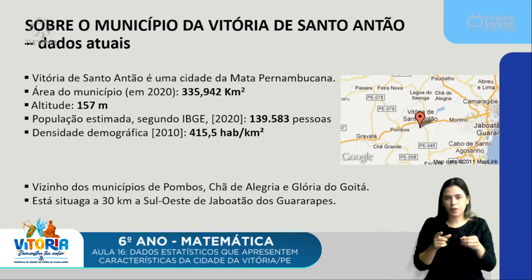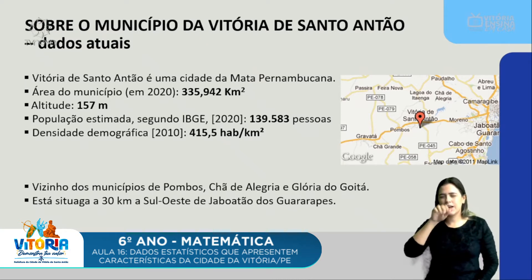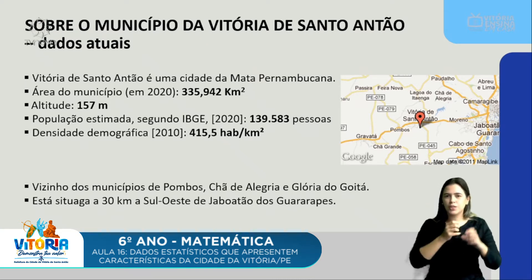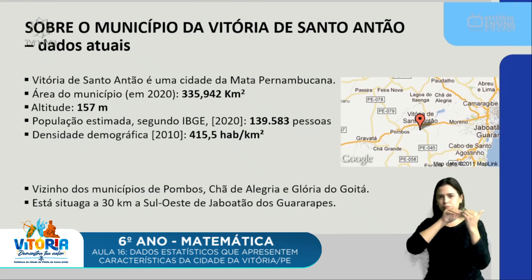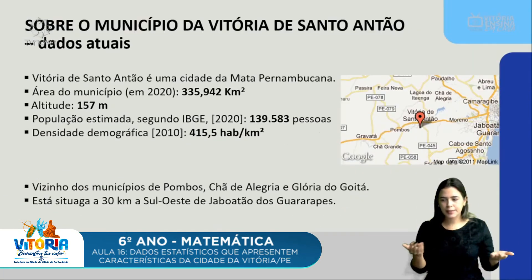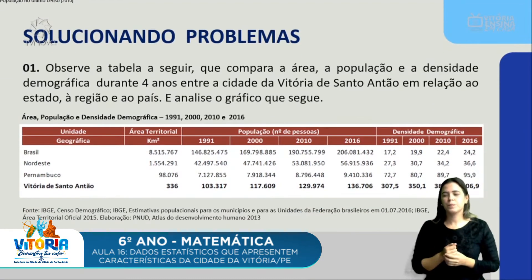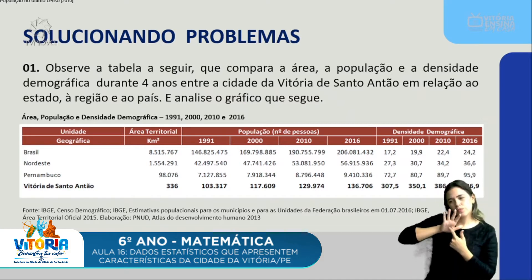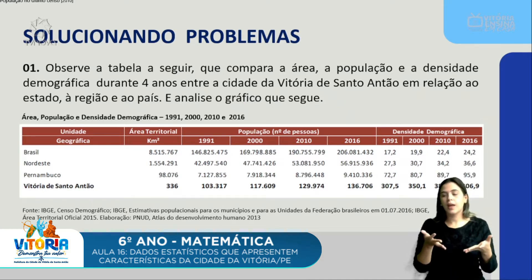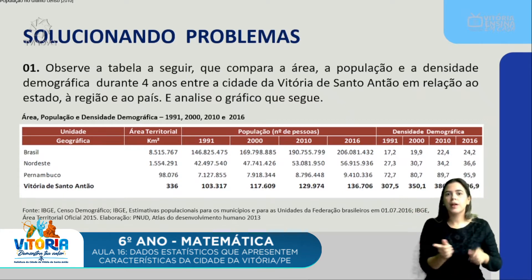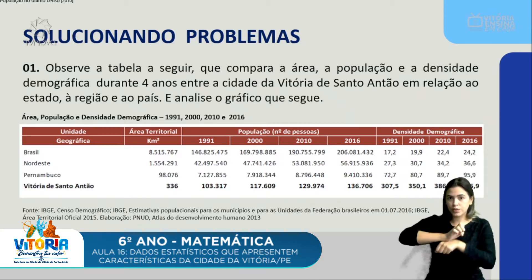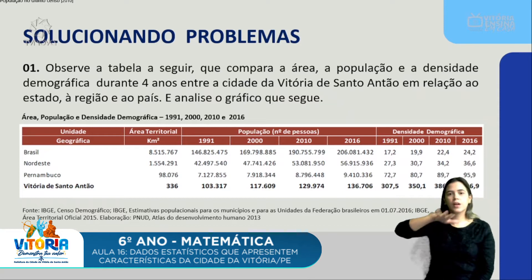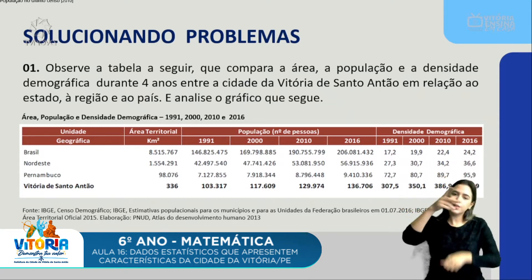Vitória faz vizinhança com os municípios de Pongo, Xande Alegria e Glória do Goitá, e está situada a 30 quilômetros a sudoeste de Jaboatão dos Guararapes, da região metropolitana. Nós temos algumas informações apresentadas nessa tabela. Na aula de hoje, a ideia é a gente analisar tabelas e gráficos. Esta tabela traz os dados de Vitória de Santo Antão, do estado de Pernambuco, da nossa região — o Nordeste — e do país, ao longo de alguns anos.